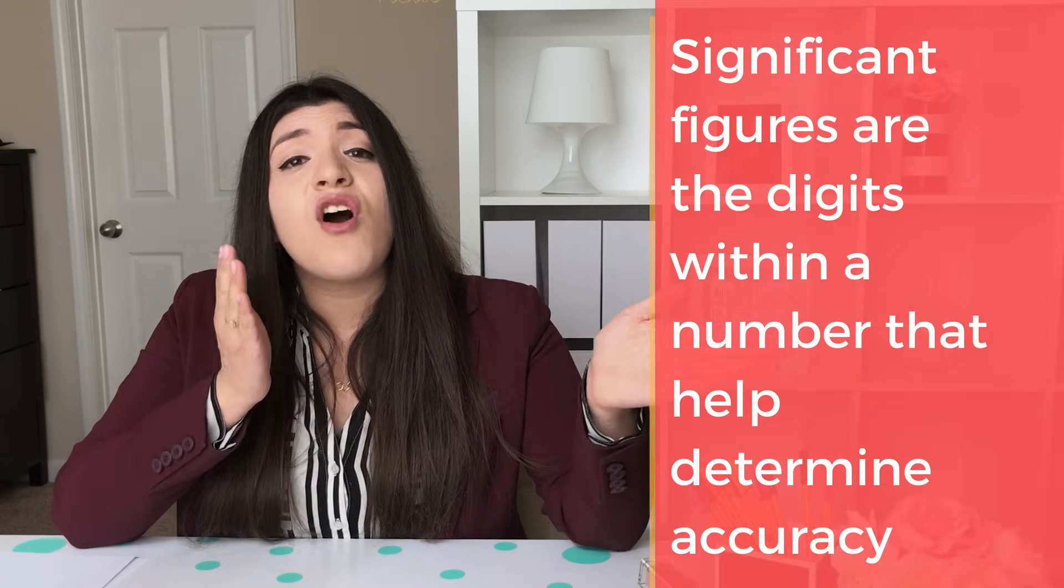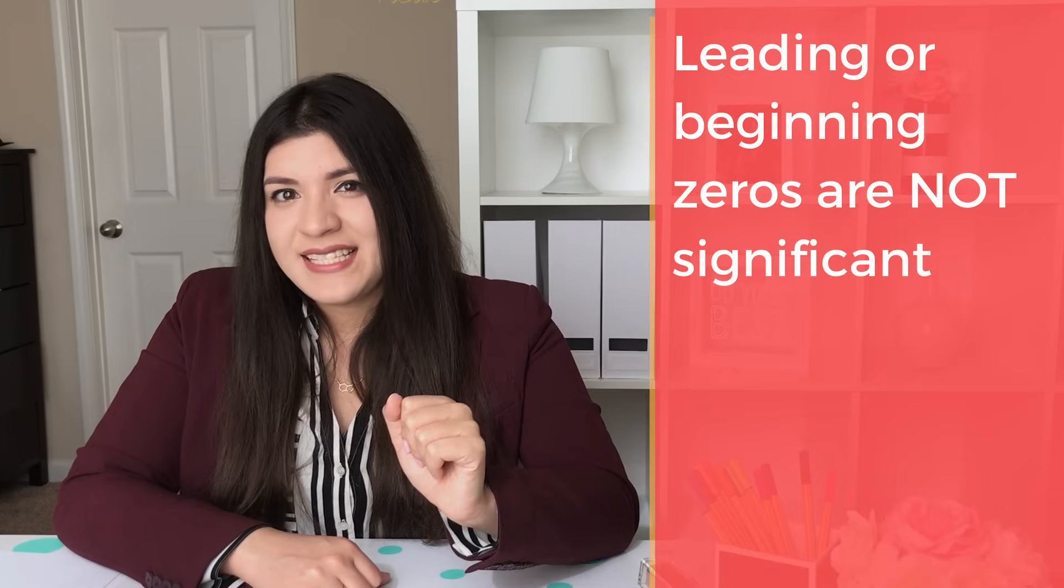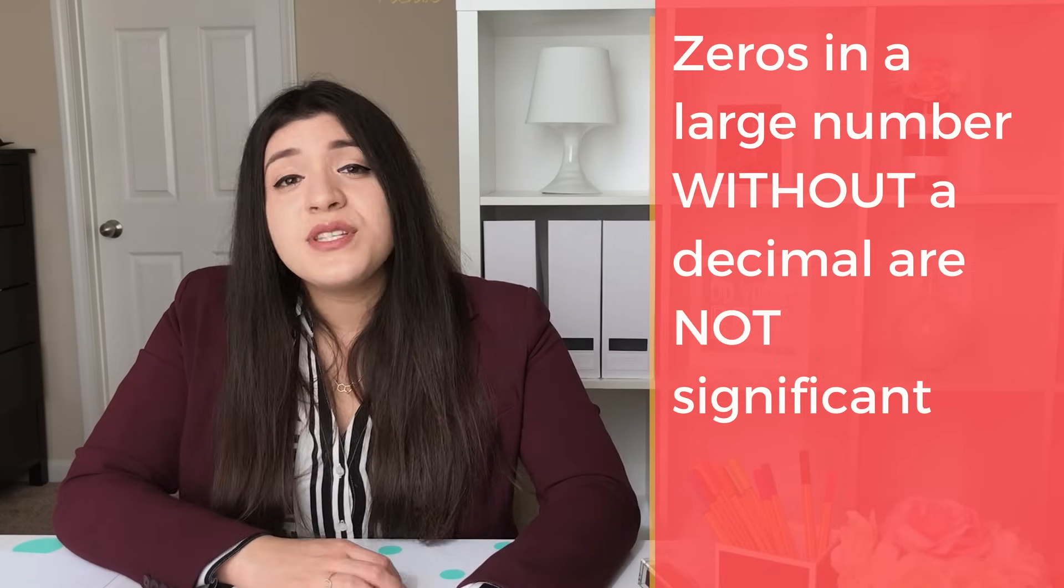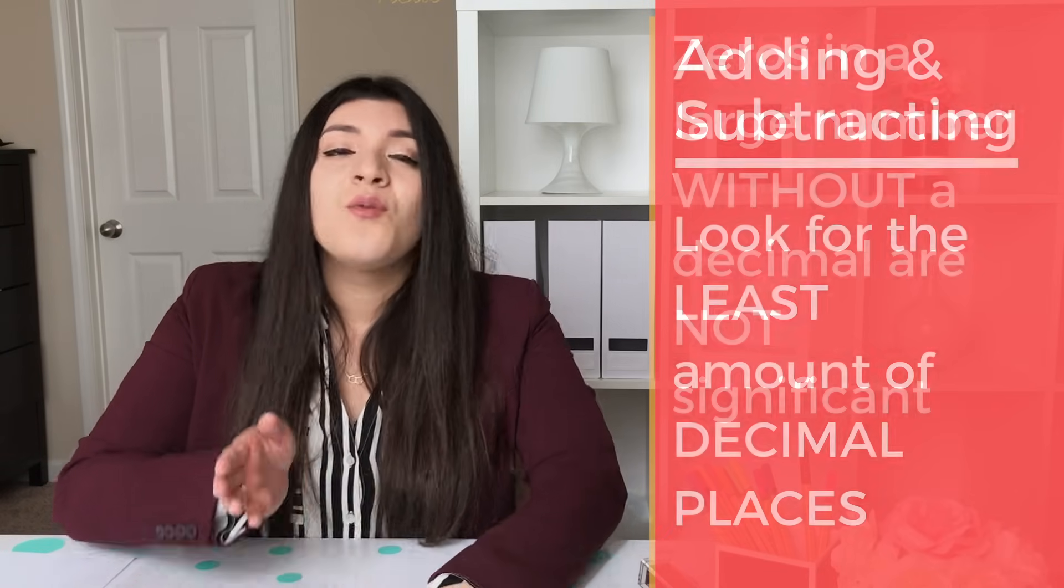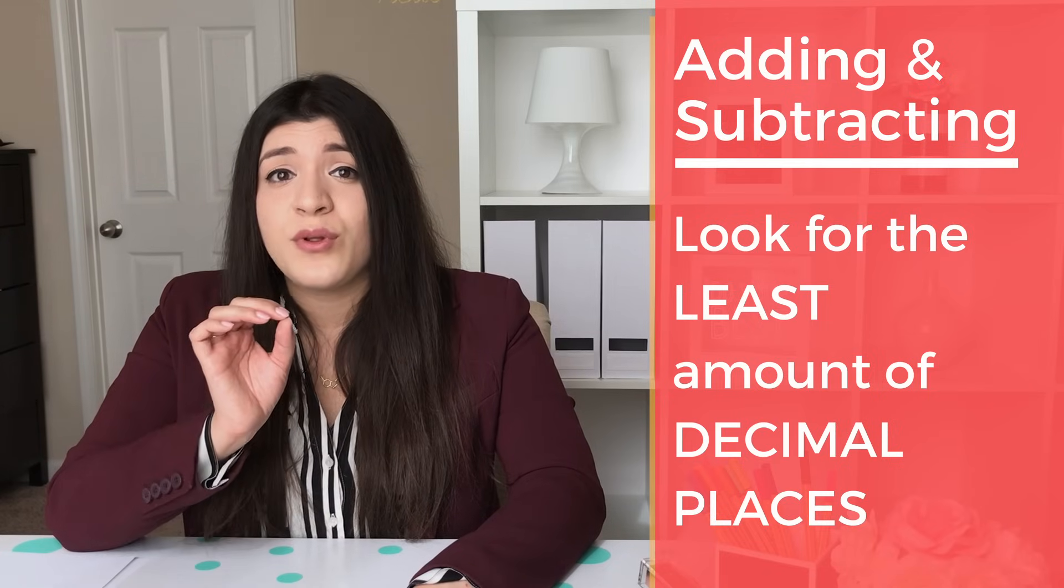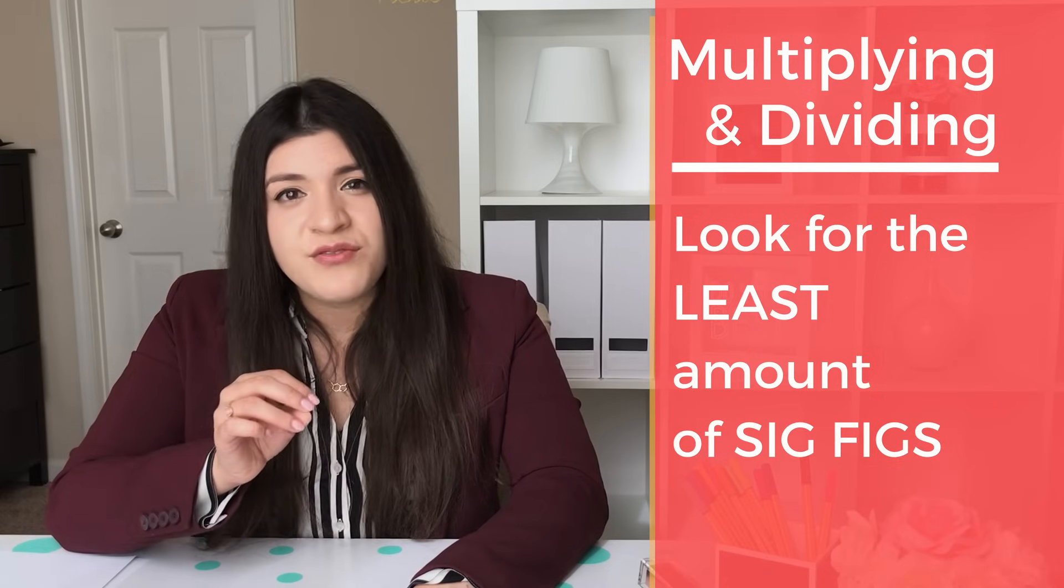All right, let's recap what we just learned. Significant figures are the digits within a number that help determine accuracy. The two rules that you gotta know. Any leading or beginning zeros do not count as significant. Any zeros in a large number without a decimal are not significant. When adding and subtracting numbers, you look for the least amount of decimal places. When multiplying and dividing, you look for the least amount of sig figs.